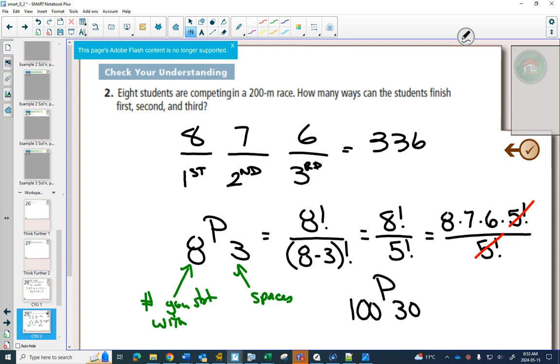100 P 30 is a lot easier to write than it would be to write 30 spaces and go 100, 99, 98, 97, 96, 95, 94, all the way down.